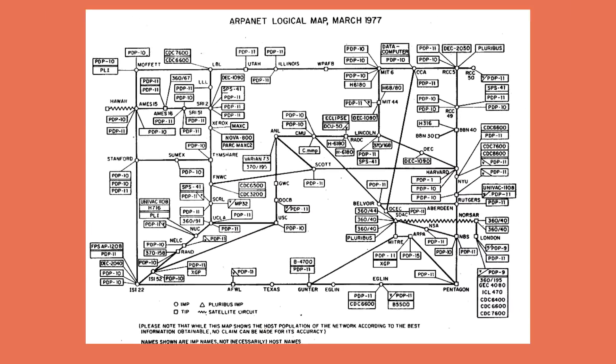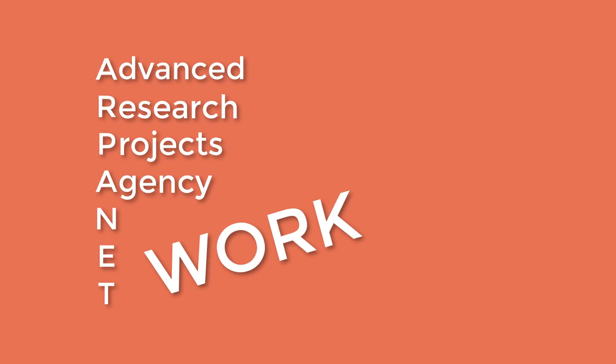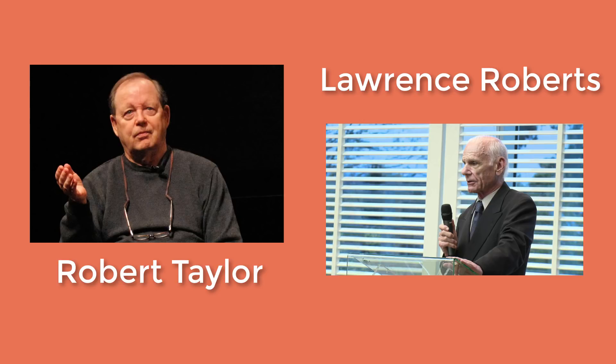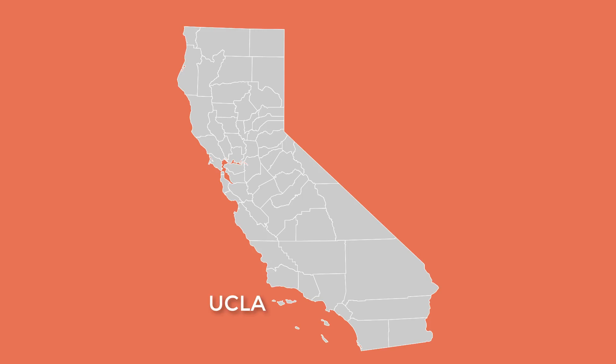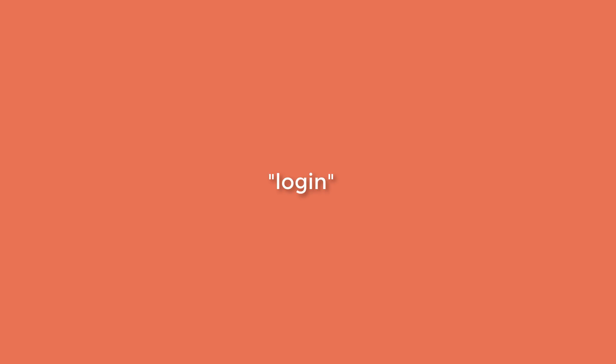Throughout the 1960s, the development of the ARPANET project was born. ARPANET stood for Advanced Research Projects Agency Network. This was led by Robert Taylor and Lawrence Roberts. The first message that was sent from UCLA to Stanford Research Institute was through ARPANET. The message sent was the word "login," but before the transmission could finish, it crashed, resulting in the final transmission being just the letters L and O.